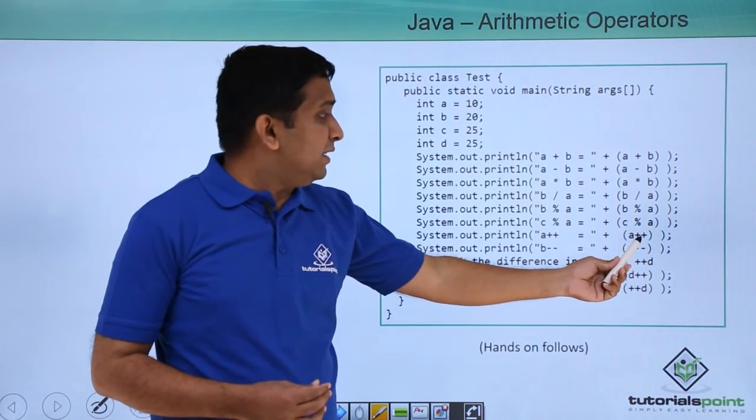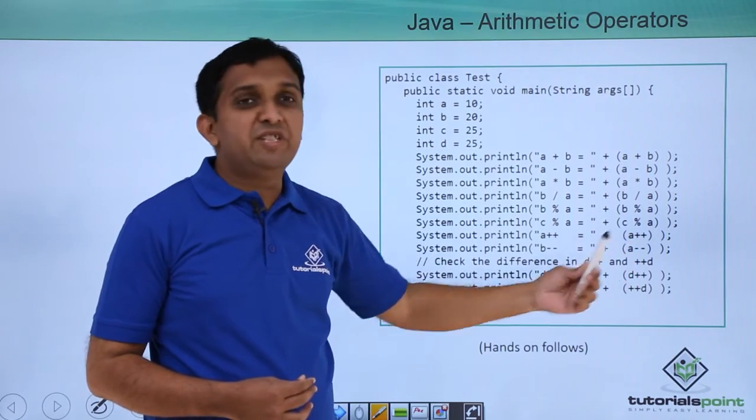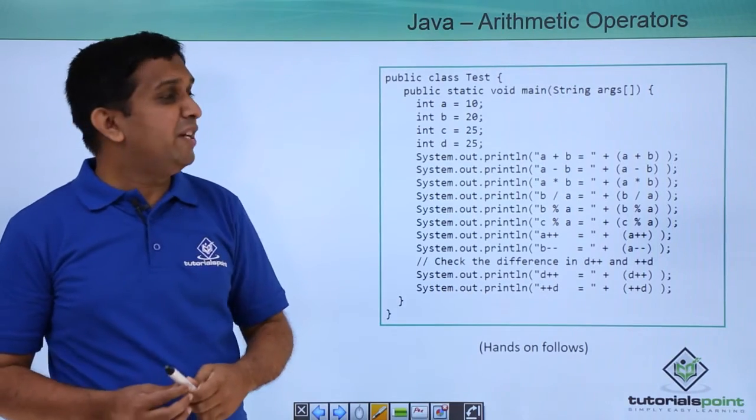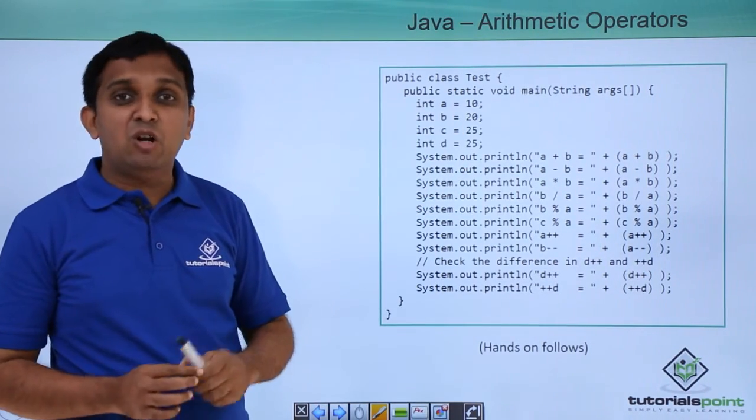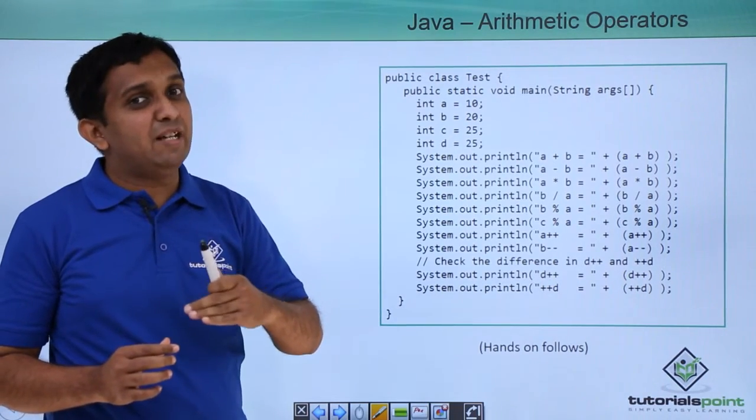a++ means it is post-increment. Post-increment means first it will print the value of the variable and then it will increment the variable. The value of a is 10, so that is printed first. Output will be 10, and after that statement the value of a will become 11.